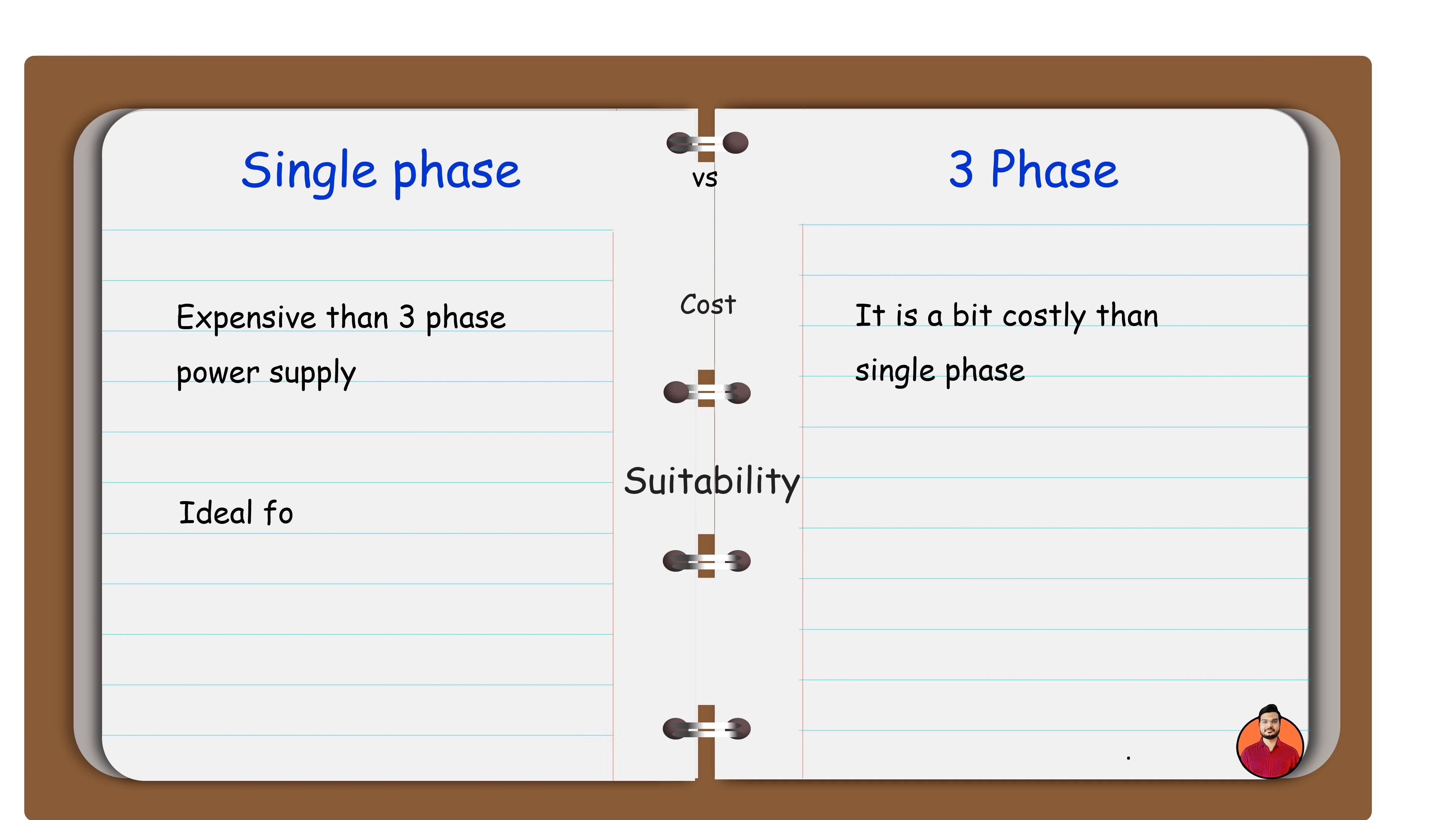Single-phase supply is ideal for small loads like lighting and heating. Three-phase supply can handle large industrial loads.